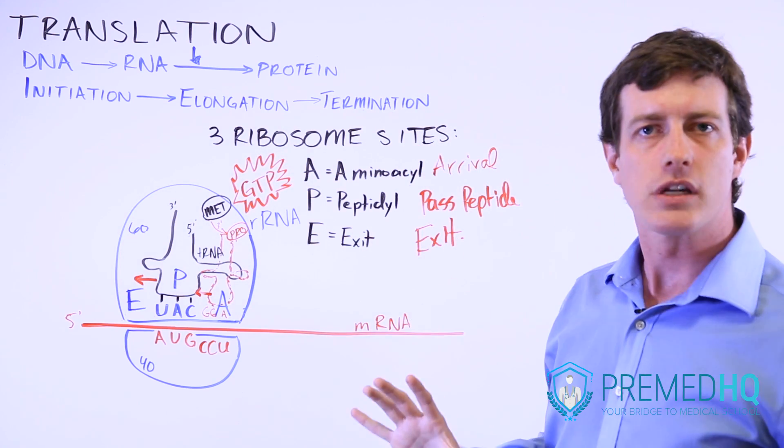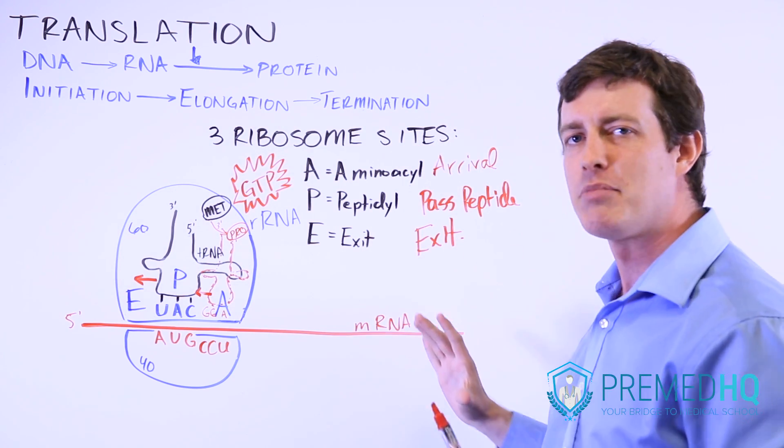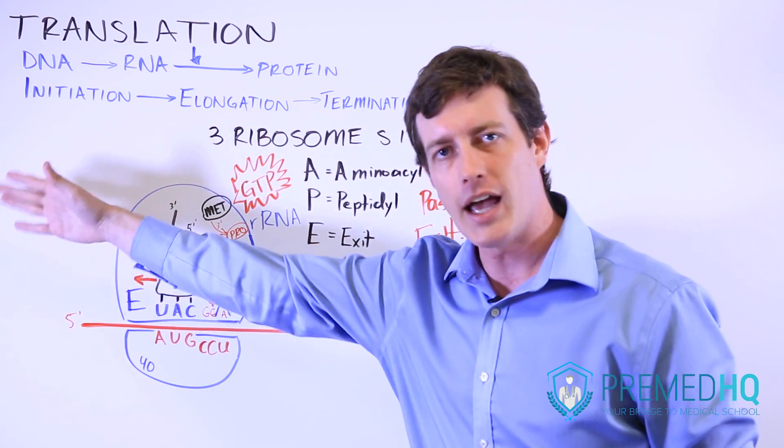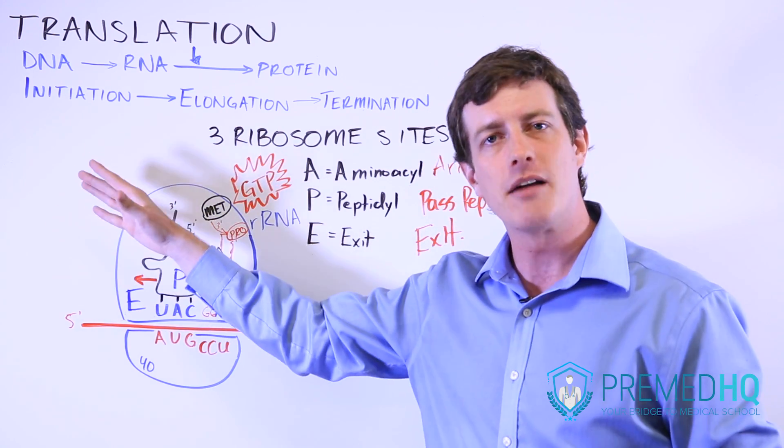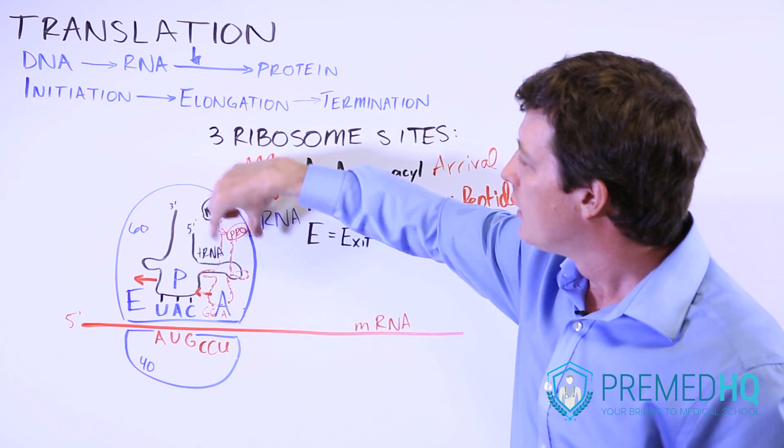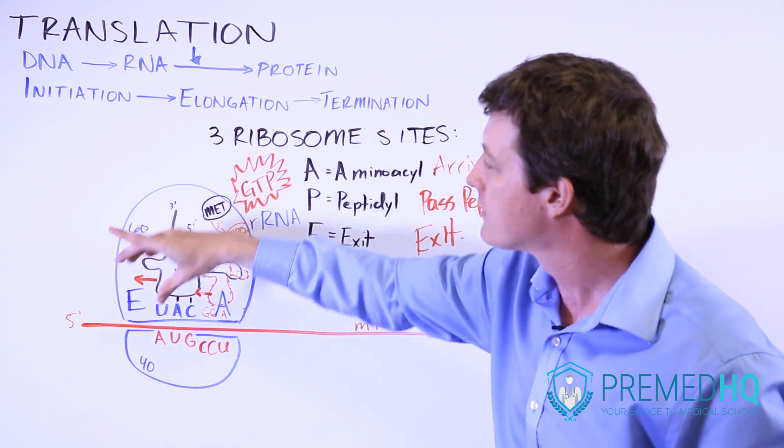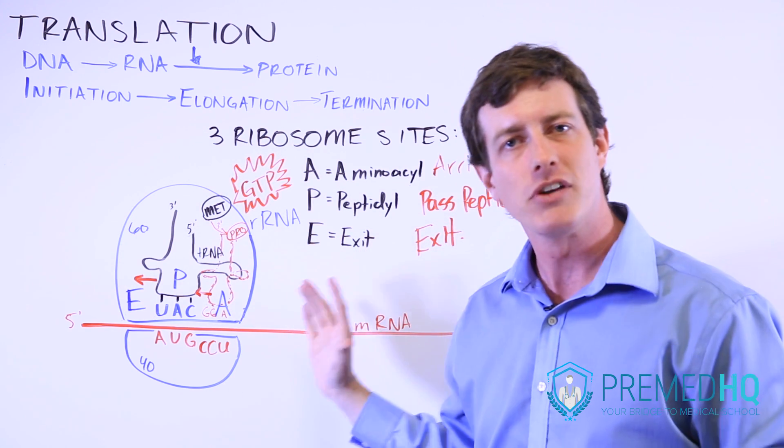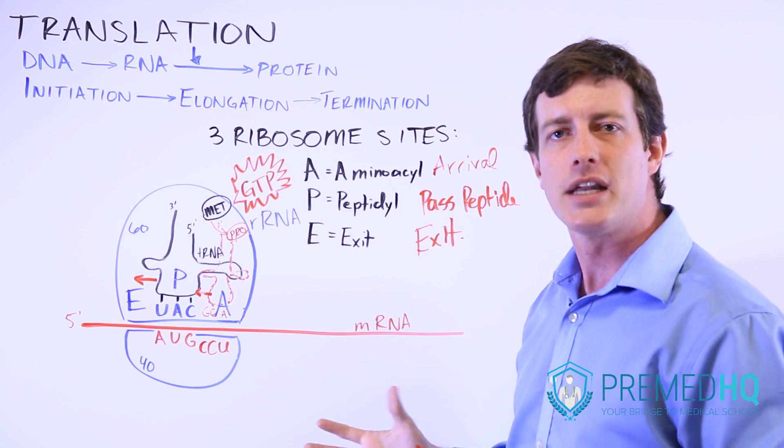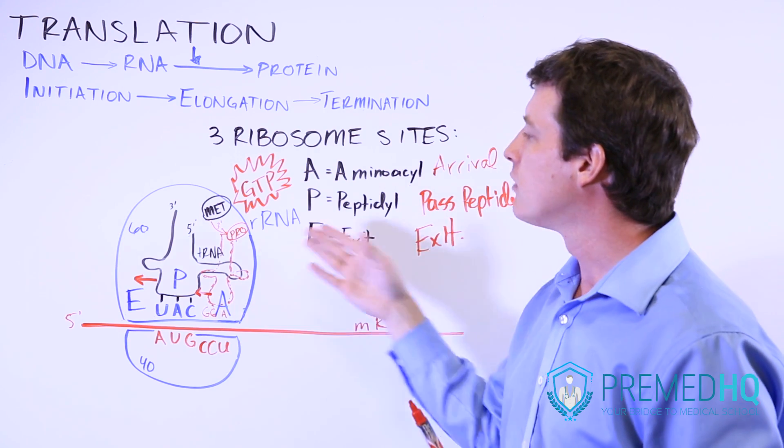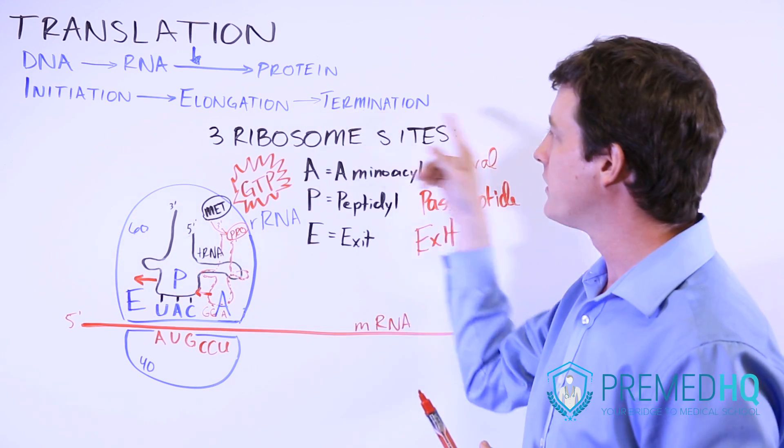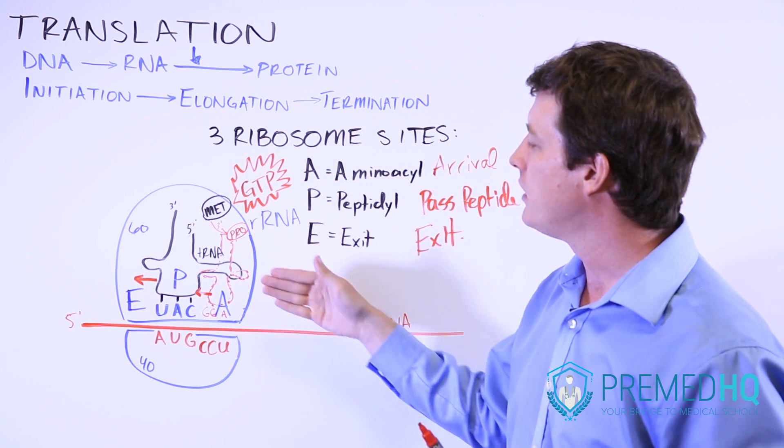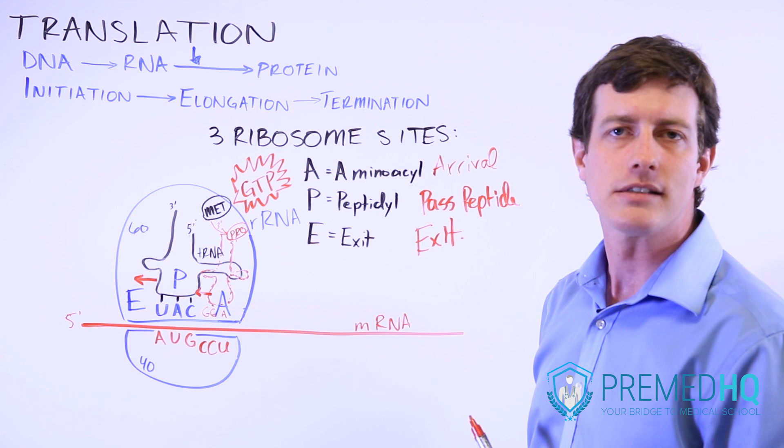And so elongation is a very concerted process. All of these things are happening at once. They're shifting. The one that was in the P site will be exiting, and during that process, it also transfers its large chain of amino acids over to the one that was in the A site and is now moving into the P site. And so this is all happening at once, and this process runs continuously until you get to termination. And as this occurs, you continue to grow a larger and larger chain of amino acids.